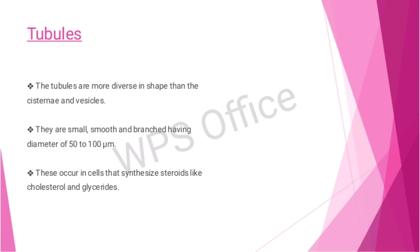Tubules are more diverse in shape than cisternae and vesicles. They are small, smooth, and branched, having a diameter of 50 to 100 micrometers. These occur in cells that synthesize steroids like cholesterol and glycerides.